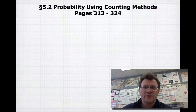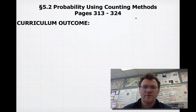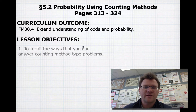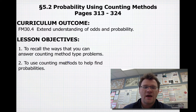Today's topic is 5.2, probability using counting methods, on pages 313 to 324 in your text. Our curriculum outcome is to extend understanding of odds and probability. Our lesson objectives today are to recall the ways that you can answer counting method type problems and to use counting methods to help find probabilities.